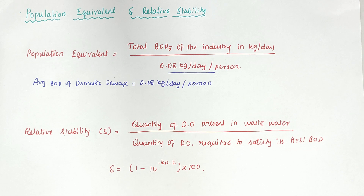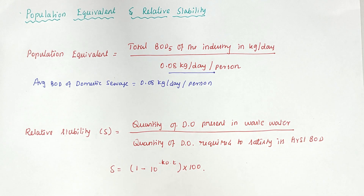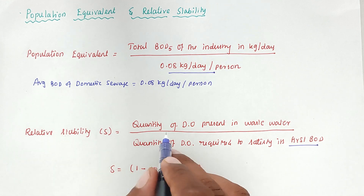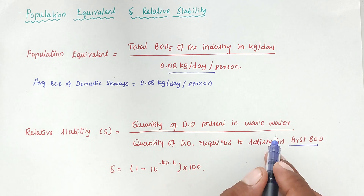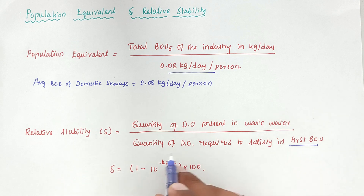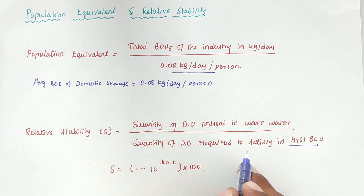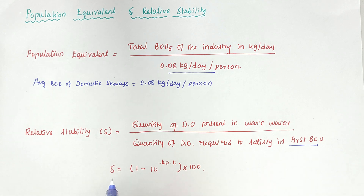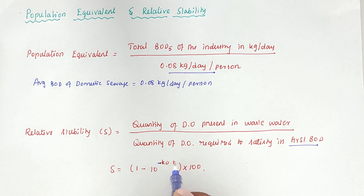Next is relative stability. It is the ratio of oxygen available in the effluent to the total oxygen required to satisfy the first stage of BOD. The formula is: S = (1 − 0.794^t) × 100 for tests at 20°C, where S is the relative stability percentage.